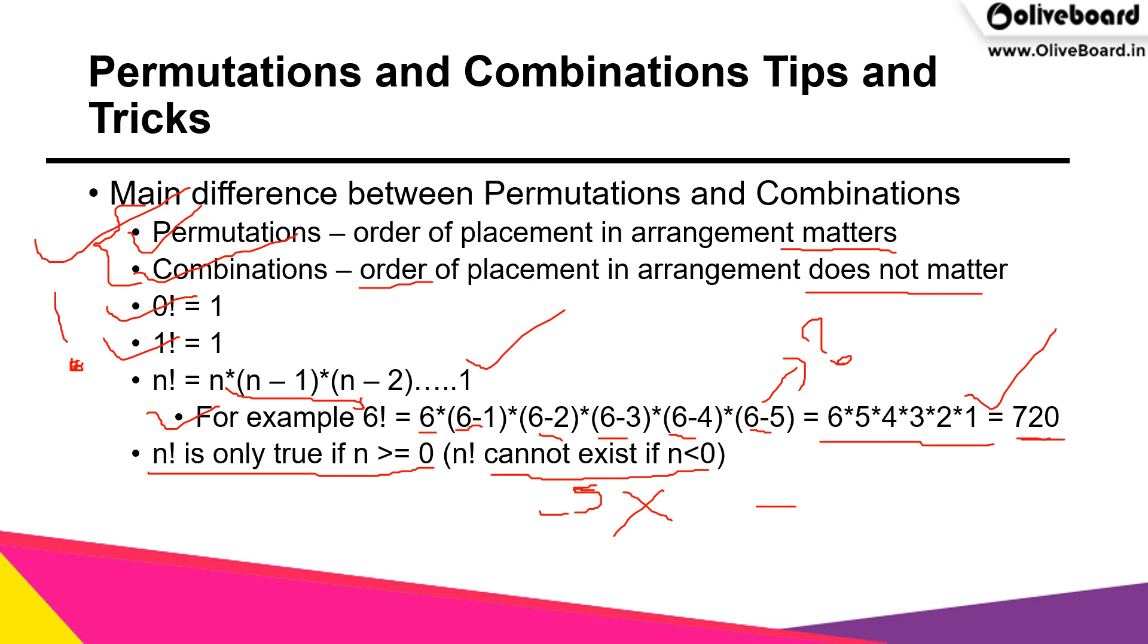Any number which is smaller than 0 - minus 1, minus 2, even minus 0.001 - there is no factorial for those numbers. You should at least have 0 factorial, which is 1. Below 0 it does not exist.